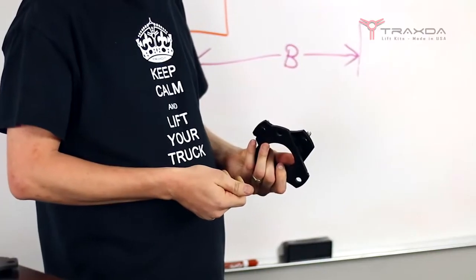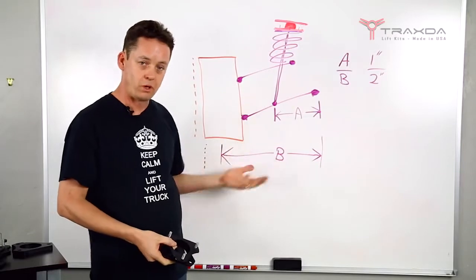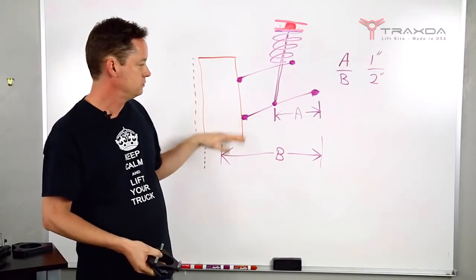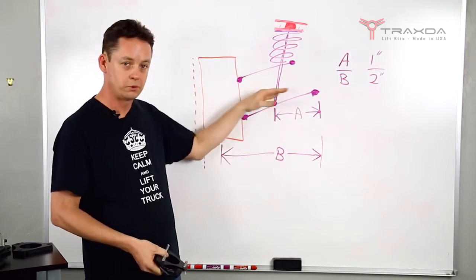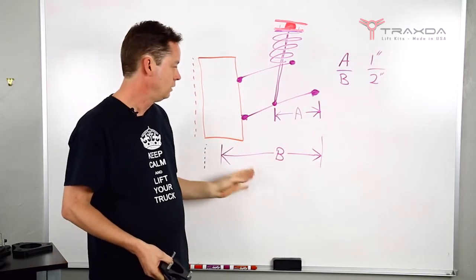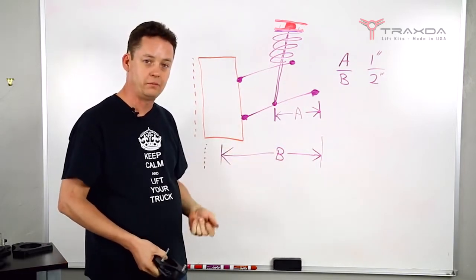Here's a two inch kit for an F-150 and here is a basic approximation of an F-150 front suspension. We've got our tire, we've got our lower control arm, our upper control arm, our strut, our piece goes on top and I've got marked out here A and B.